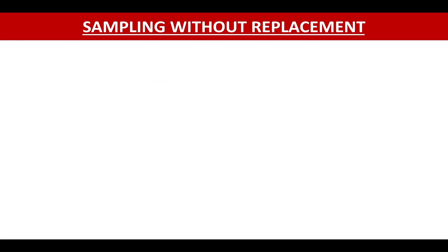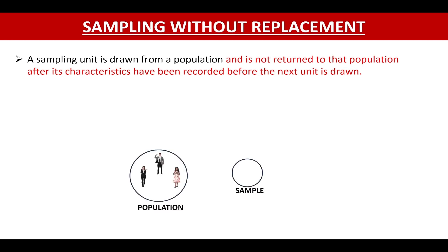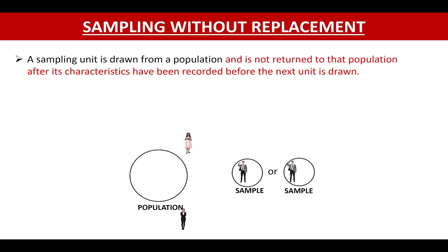Now coming to sampling without replacement. In sampling without replacement, a sampling unit is drawn from a population and is not returned to that population after its characteristics have been recorded before the next unit is drawn. So we will draw a sampling unit, record its characteristics, and we will not replace it back to the population. So in the next draw, we might end up selecting either of the two remaining sampling units. Thus, each draw is not independent.